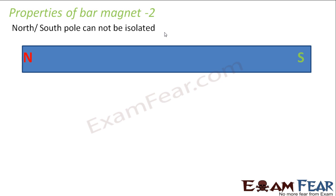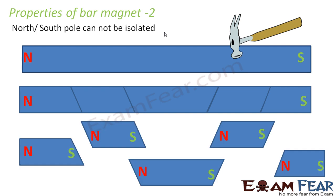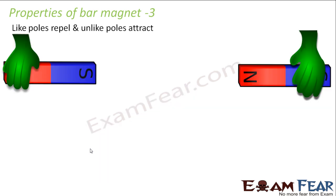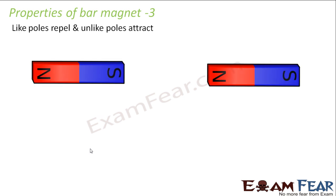The second property is that north and south poles cannot be isolated. If you try to cut the magnet in the middle to separate the poles, you don't get isolated poles — you get two separate magnets, each with its own north and south pole. As shown here, if the magnet is cut into five pieces, you get five different magnets, each with a north and a south pole.